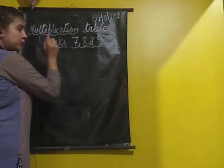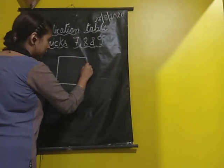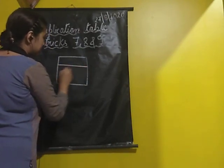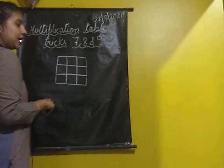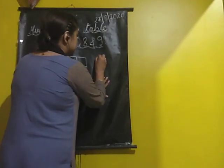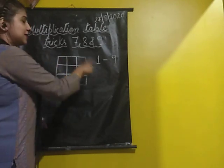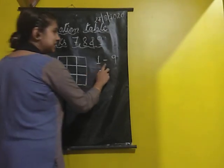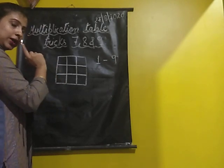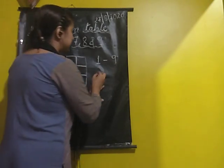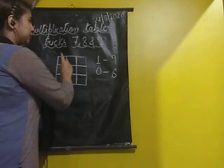For the table of 7, rule number 1: we will make a grid or a table with 3 rows and 3 columns. Rule number 2: we will place the digits 1 to 9 into the boxes in their respective places in the ones place. And in the tens place, we will place the digits from 0 to 6. These are the rules to remember for the table of 7.